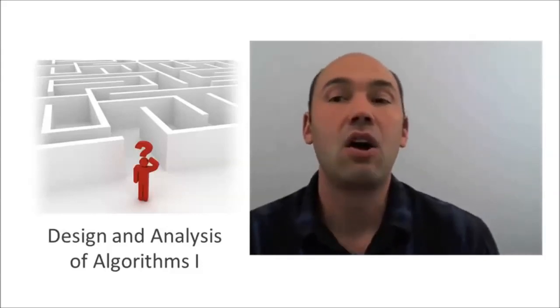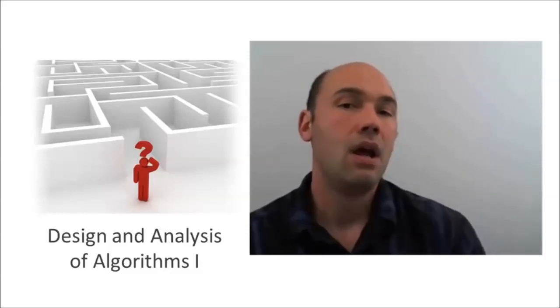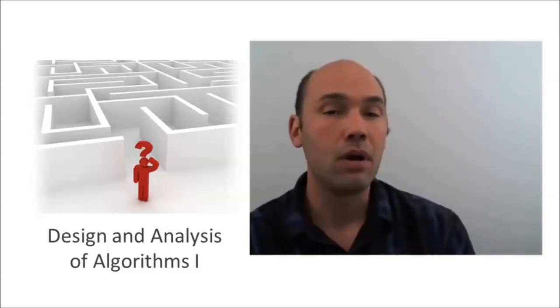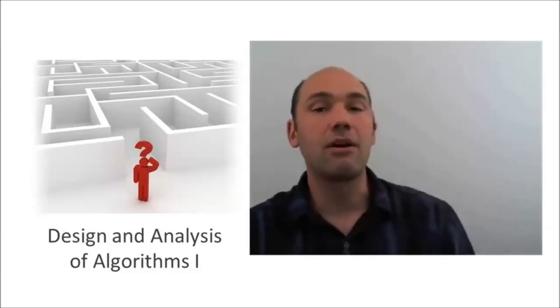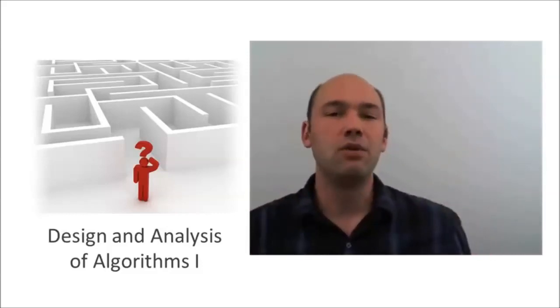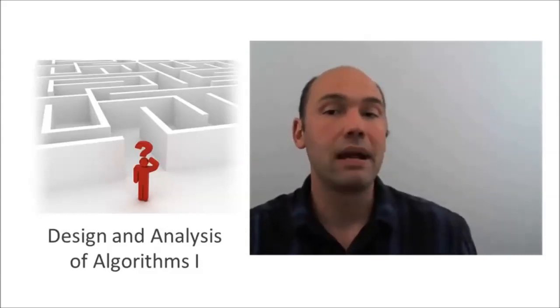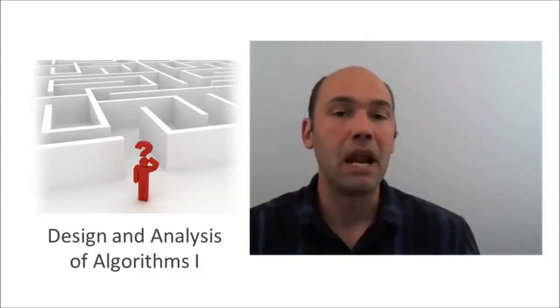We've discussed a number of divide and conquer algorithms, and so far I've been giving short shrift to proofs of correctness. This has been a conscious decision on my part. Coming up with the right divide and conquer algorithm for a problem can definitely be difficult. But once you have that eureka moment and you figure out the right algorithm, you tend to also have a good understanding of why it's correct, why it actually solves the problem in every possible input.